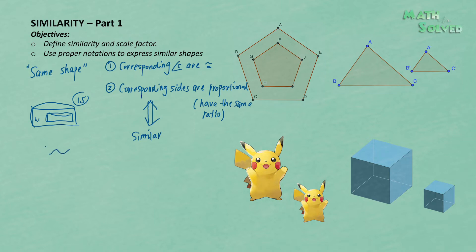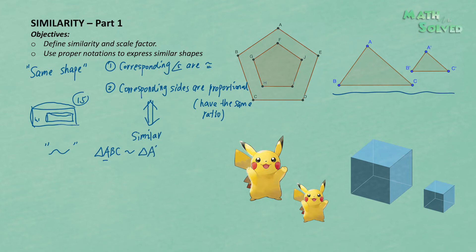In terms of notation, we use the tilde symbol for being similar. Taking these two triangles as an example, you write: triangle ABC similar to triangle... and here's an important point — in this expression we always write the corresponding vertices in the same order. If vertex A is in the first place for one triangle, then the corresponding vertex A prime should also be in the first place, then B prime corresponding to B, and then C prime.